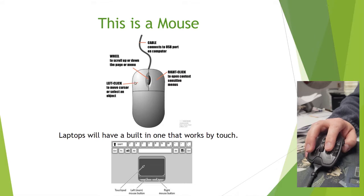The left click is the regular click. If someone says click on something, they want you to left click on it. If they say double click on something, they want you to left double click. That means click-click quickly — that's a double click.